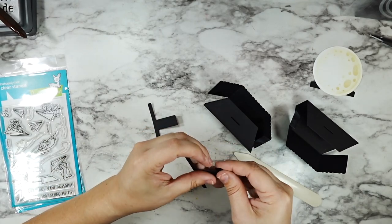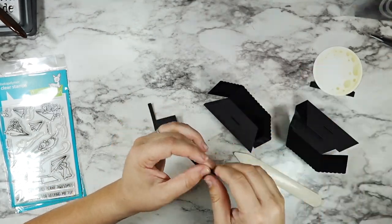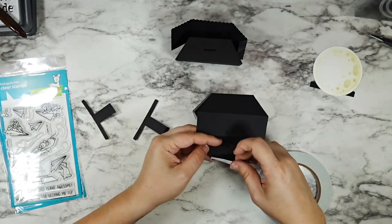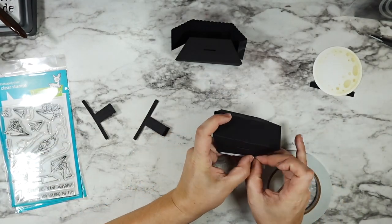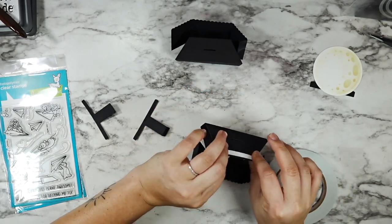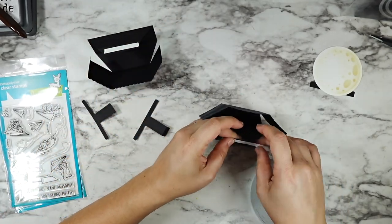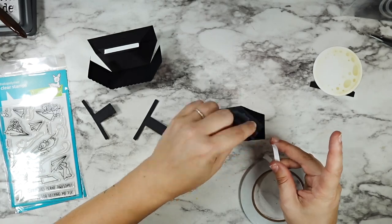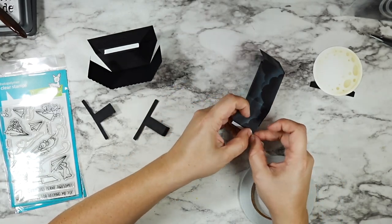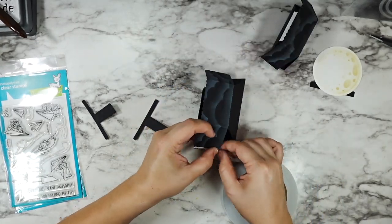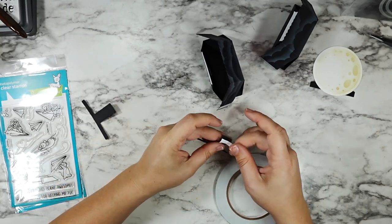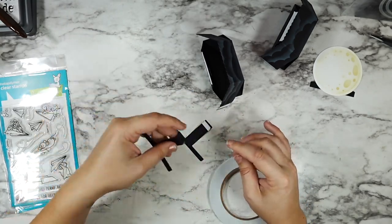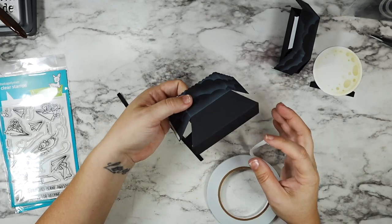But once you get everything folded over it's super easy and you are going to add adhesive to the top tab of each platform as well as the bottom tab on each of those tees. And then you also need to add a little bit of tape to these side tabs because that's how you connect the two sections of the platform together.